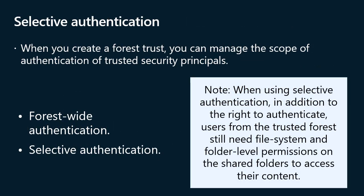When you create a forest trust, you can manage the scope of authentication of trusted security principals. There are two modes: forest-wide authentication and selective authentication. Forest-wide authentication enables all users in the trusted forest to authenticate for services and access on all computers in the trusting forest, and all users from the trusted forest are considered authenticated users in the trusting forest — meaning any resource granting permissions to authenticated users becomes accessible by those users. If you choose selective authentication, users in the trusted forest are not considered authenticated users in the trusting forest; instead, you must explicitly designate computers they can authenticate to by granting them the 'Allowed to Authenticate' permission on those computers.